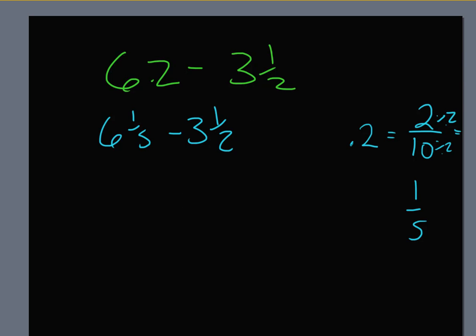So we can convert this to six and one-fifth minus three and one-half. Now we're kind of at the starting point where we were before. And we can take our fractions aside. One-fifth minus one-half. Can't do that, right? Got to convert. So I'm going to multiply this fraction by what number? Times two. And this one times what? Times five.